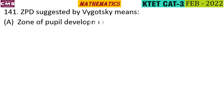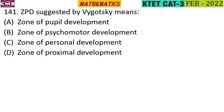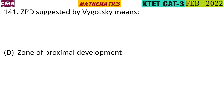ZPD as suggested by Vygotsky means which of the following? The options are: zone of people development, zone of psychomotor development, zone of personal development, and zone of proximal development. The correct answer is option D — zone of proximal development.